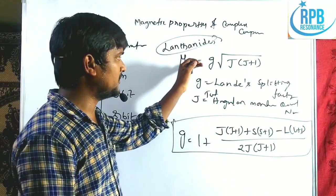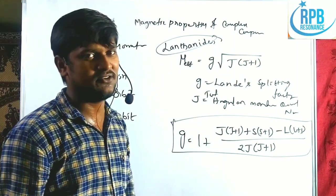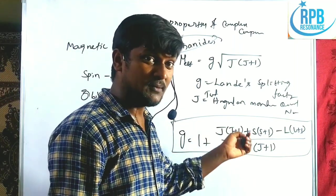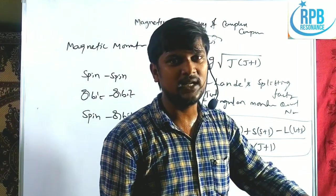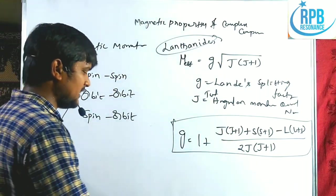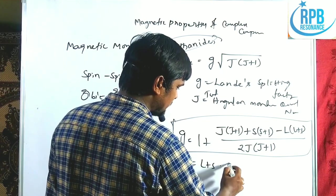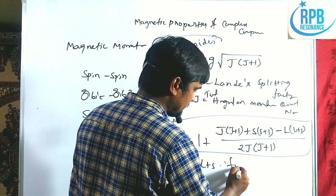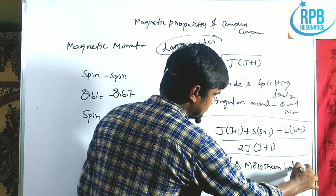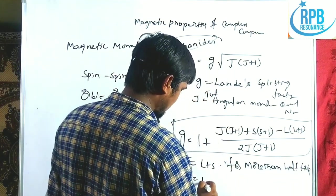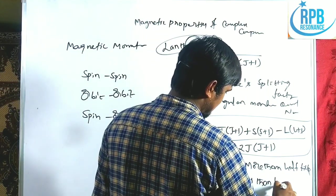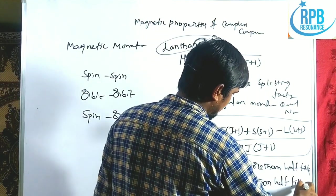For lanthanides, J = L + S for more-than-half-filled configurations, and J = L − S for less-than-half-filled configurations. S and L values are frequently used in term symbols. L values correspond to S, P, D, F orbitals (L = 0, 1, 2, 3), with ML values ranging from −L to +L. S = +½ for upward spin and −½ for downward spin.